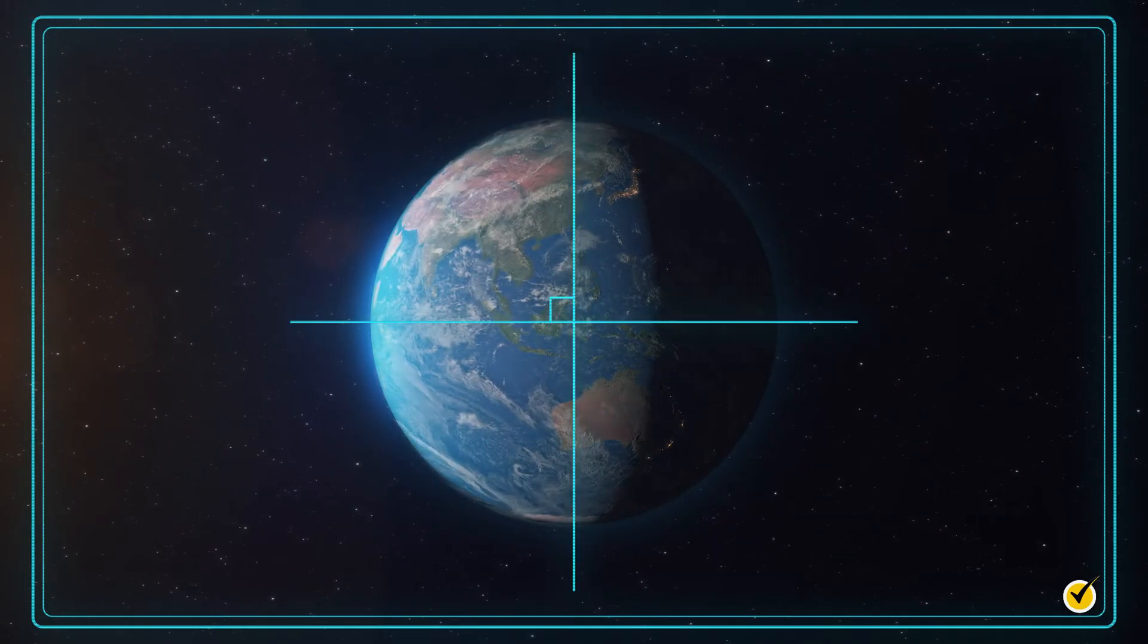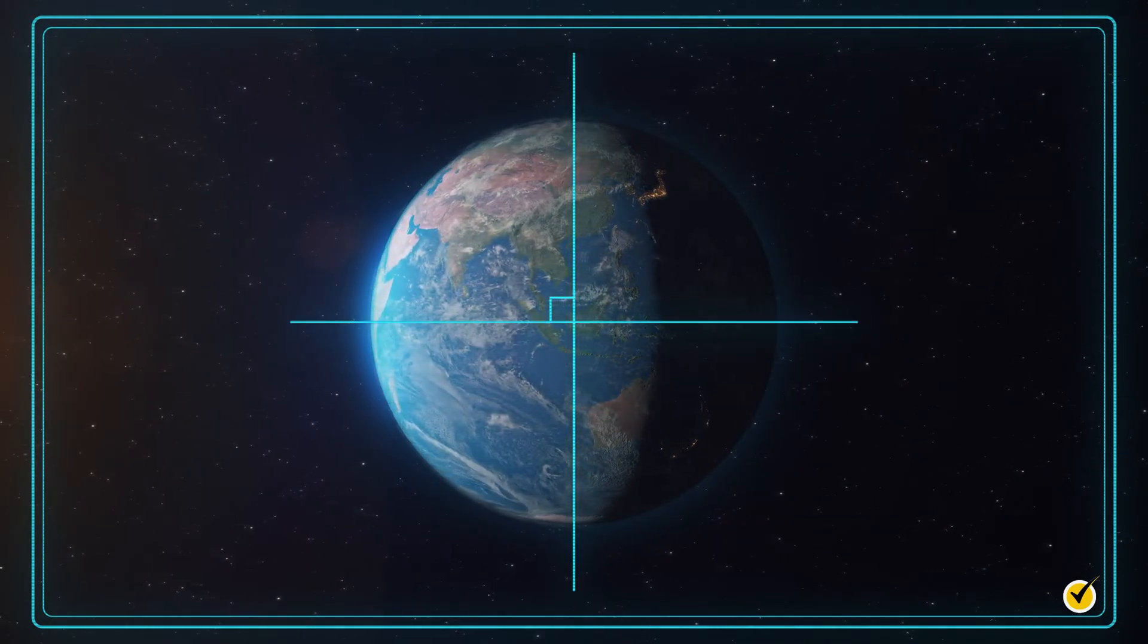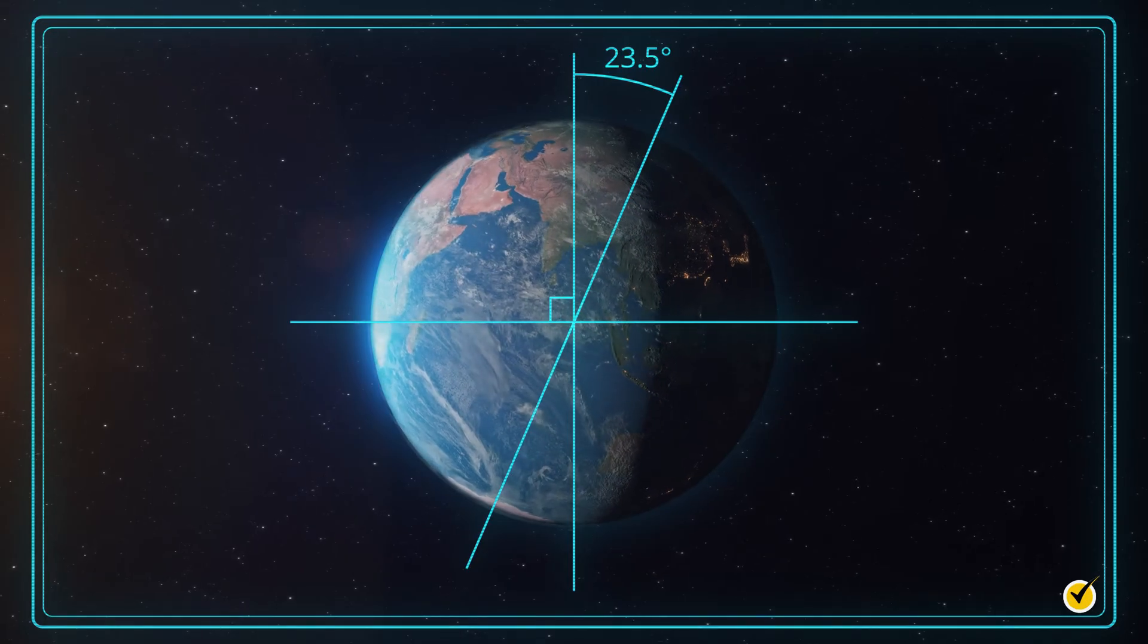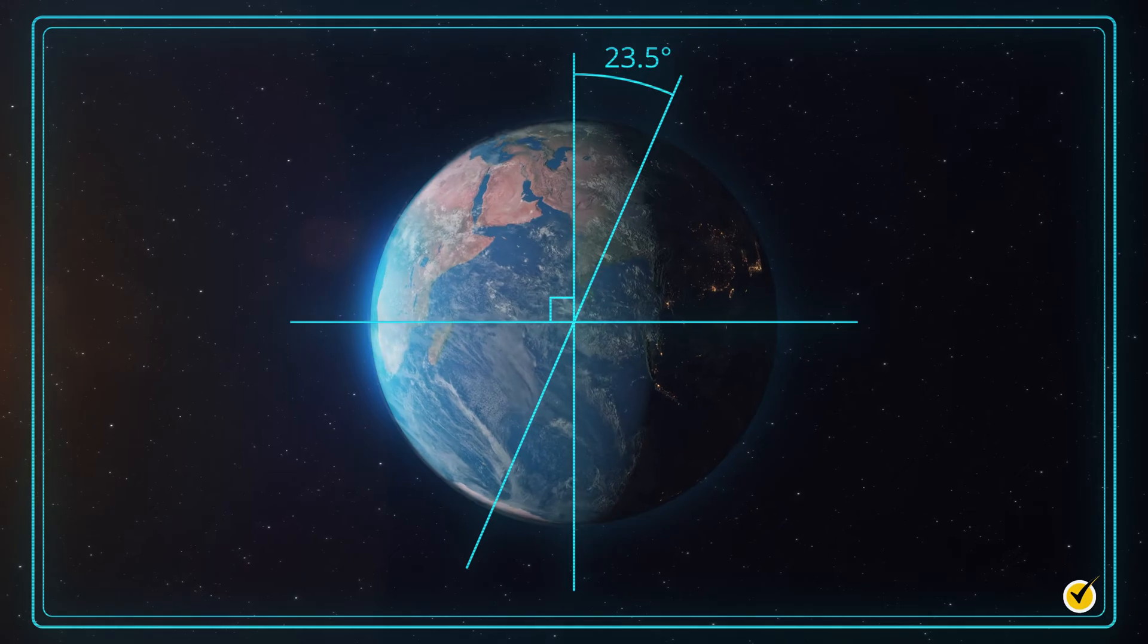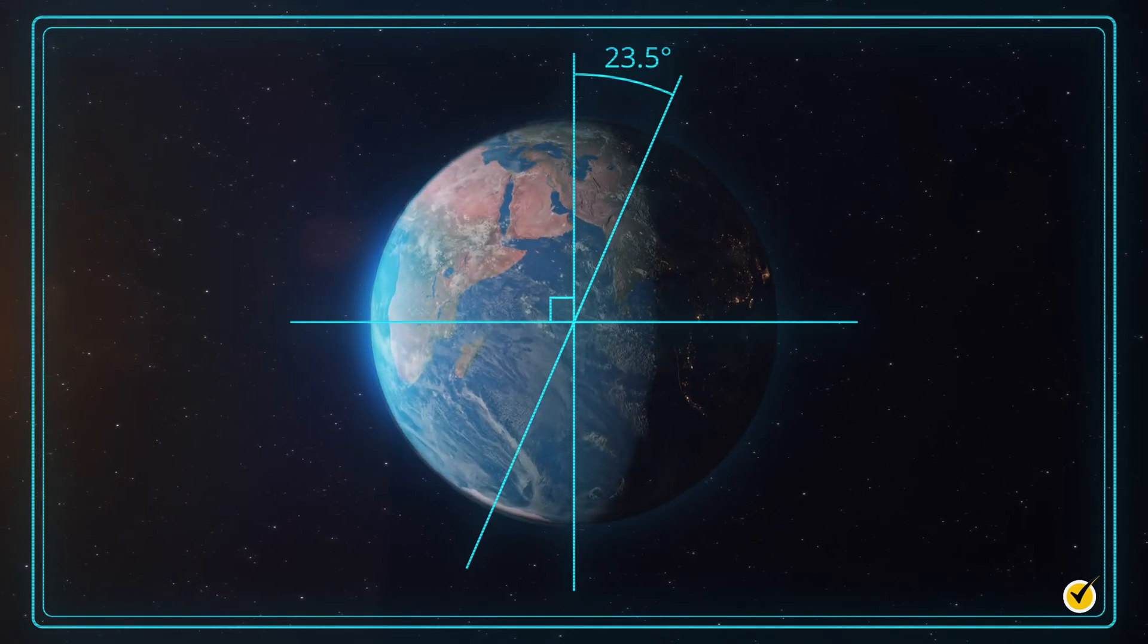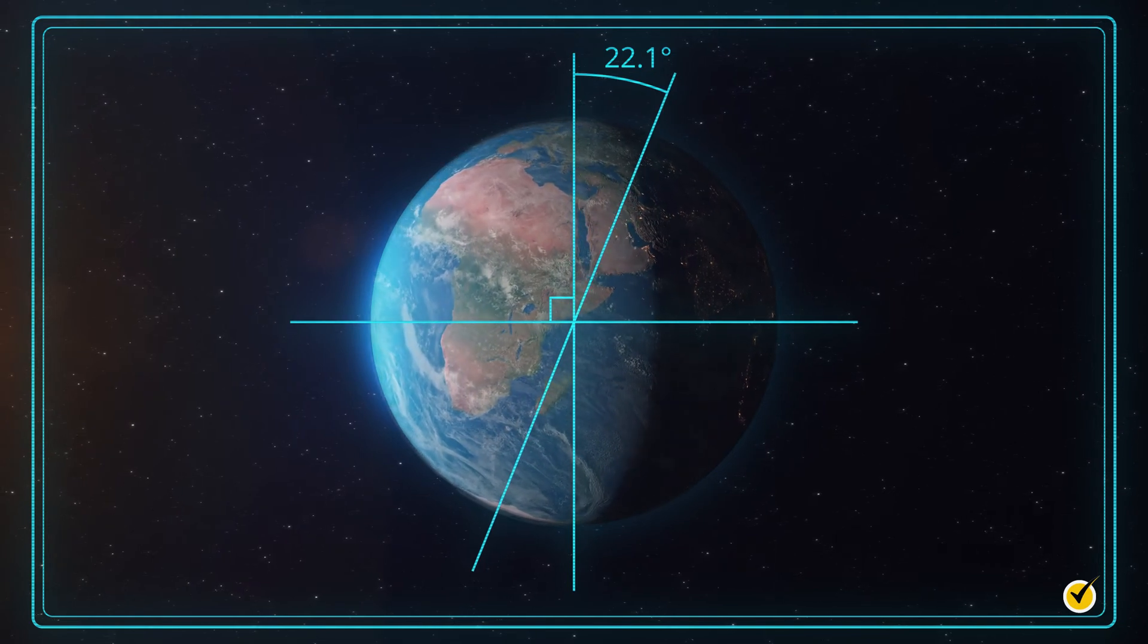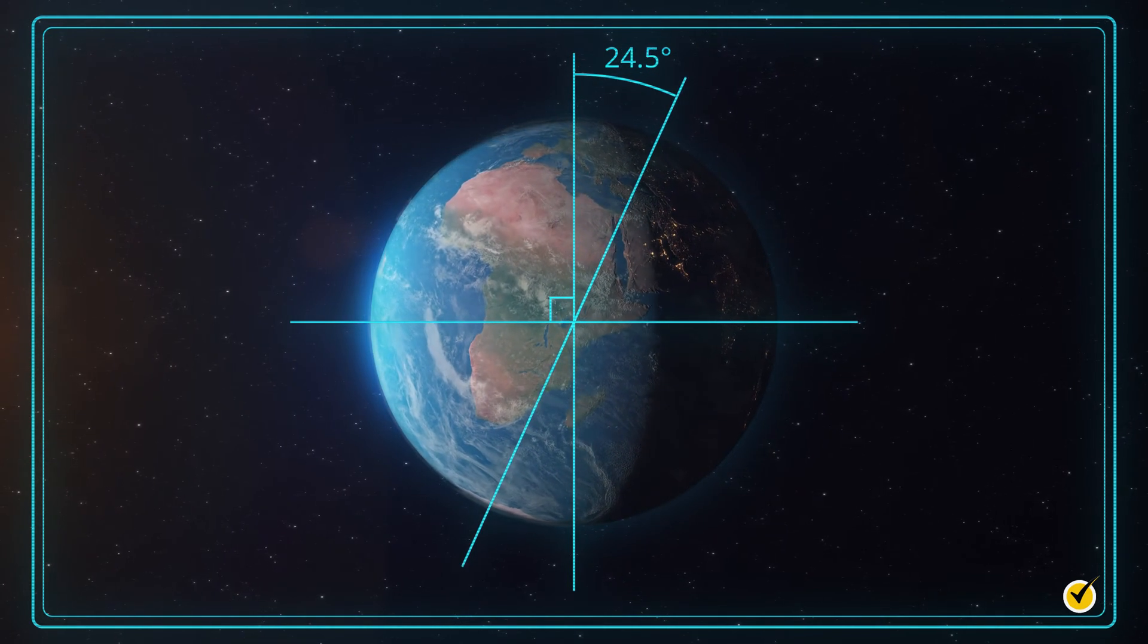However, Earth's axis isn't straight up and down, like a top. It's angled at 23.5 degrees. At least, it is right now. Over the course of about 40,000 years, this angle will cycle between 22.1 degrees and 24.5 degrees.